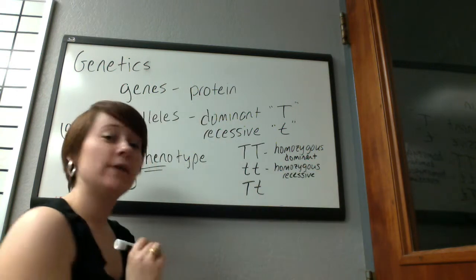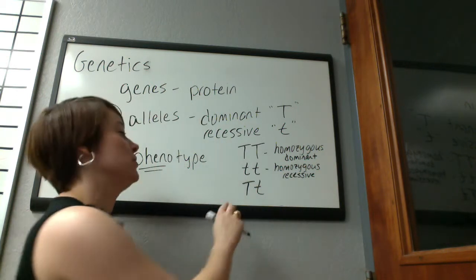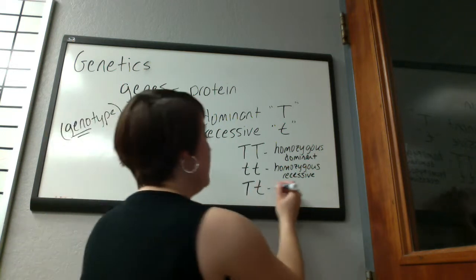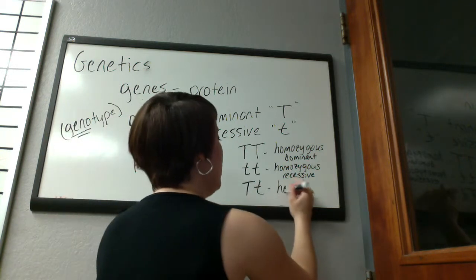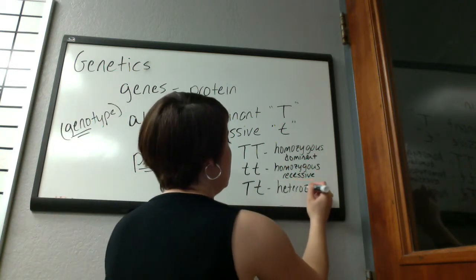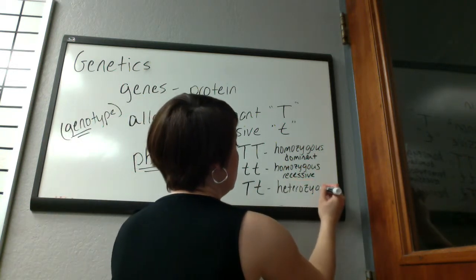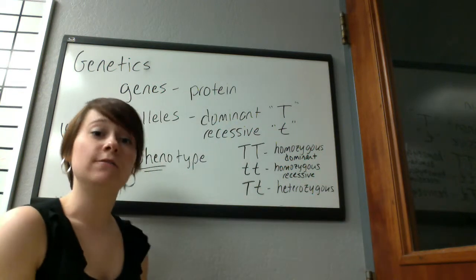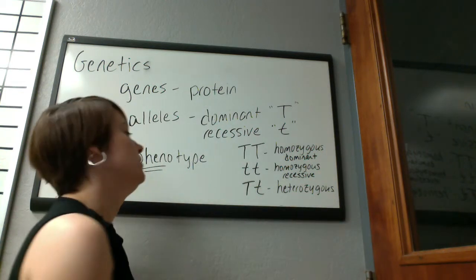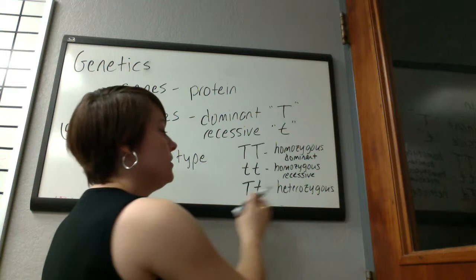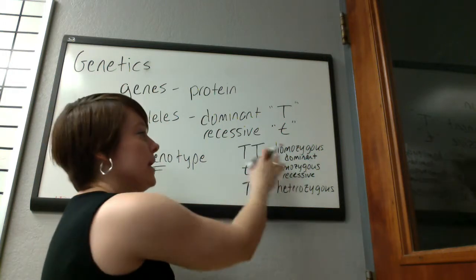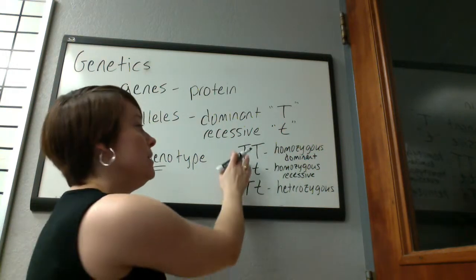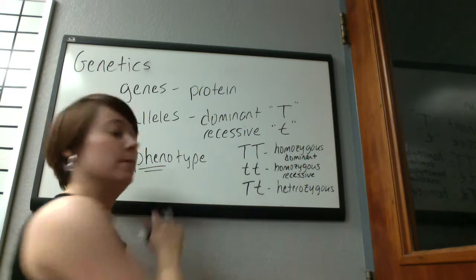If you have two different alleles for that trait — so a dominant allele and a recessive allele — that is termed heterozygous. Hetero means different, like heterosexual. So heterozygous means you have two different alleles, while homozygous means you have duplicates of the same allele — either both dominant or both recessive.